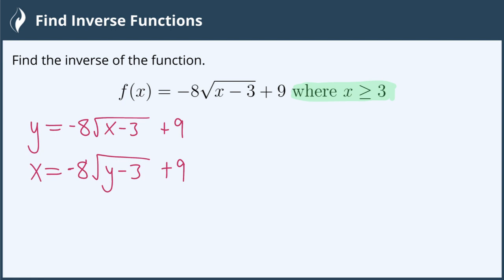Now we need to solve for y to find the inverse function. To do that, we're always going to work from the outside in, which means we're going to start by subtracting 9 on both sides. So we do that minus 9. Now we have x - 9 = -8√(y-3).